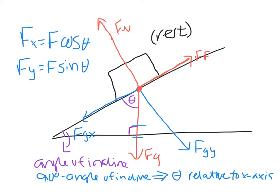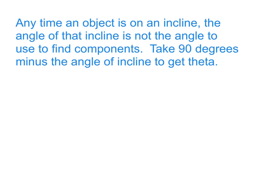As a general rule of thumb, any time an object is on an incline, the angle of that incline is not the angle to use to find components. Take 90 degrees minus the angle of incline to get theta to use for the cosine and sine to get the x and y components.